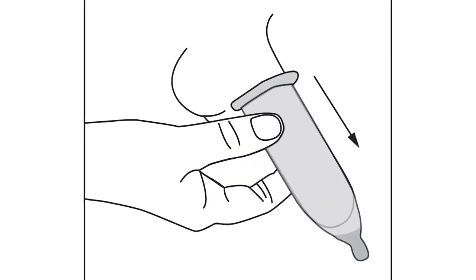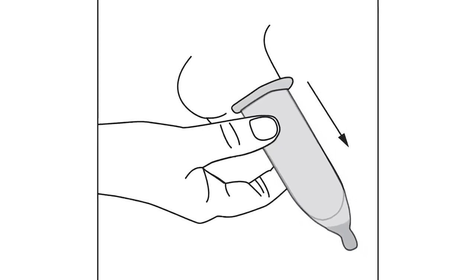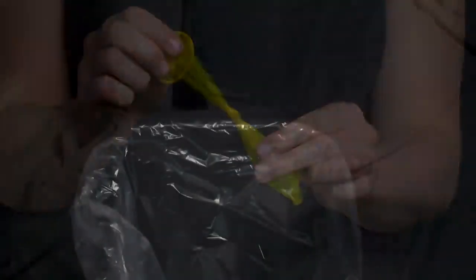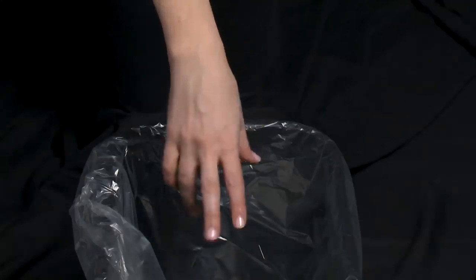After ejaculation, while the penis is still hard, hold on to the base of the condom and pull out from the body. Then carefully remove the condom and tie it in a knot. Throw the condom in the garbage, not in the toilet, because it can clog your toilet or wreck your septic system.